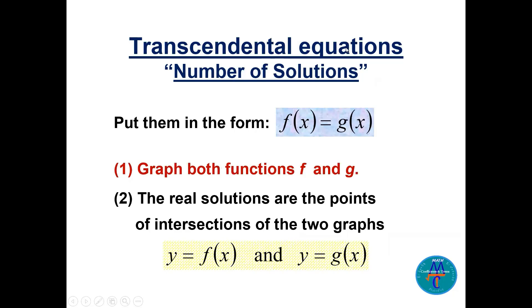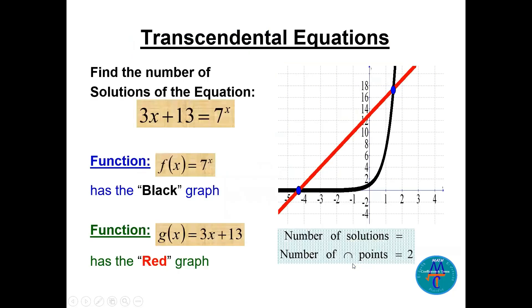So when we have transcendental equations we put f(x) = g(x) and then we take the first one on the left, function y = f(x), and the second one we take y = g(x) and we find the intersection points. See this one: 3x + 13 that will be a straight line. 7 to the power x will be exponential function, that's the black. And we see here there are two points in the intersection, that means there are two solutions.